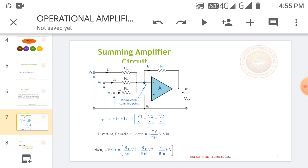We know I equals V by R. So V1 by R1 plus V2 by R2 plus V3 by R3. Here, instead of using R1, R2, R3, we use Rin. Finally, the inverting equation is Vout equals minus RF by Rin times Vin.